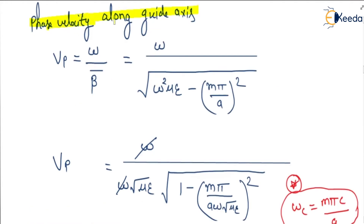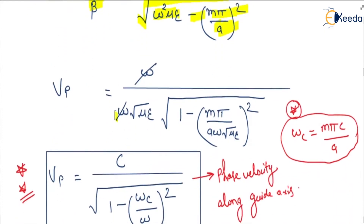From here, we can calculate the phase velocity along the guide axis, which is equal to ω divided by beta bar. It is ω divided by the square root of ω²με minus (mπ/a)². The phase velocity vp equals ω, and taking ω√(με) common, we get ω divided by ω√(με) times the square root of 1 minus (mπ / aω√(με))².